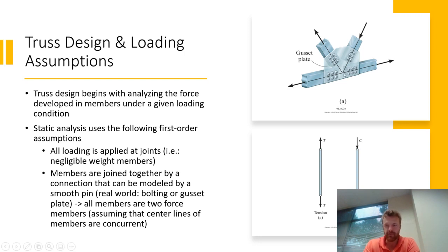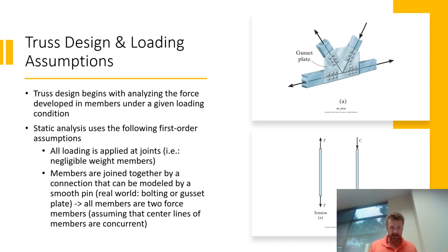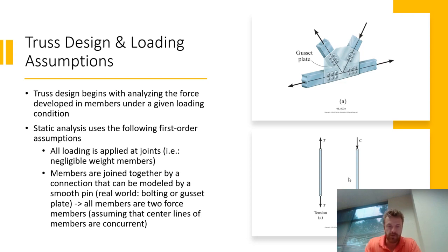At each of our joints — looking at an actual interconnection like a gusset plate in the real world — if all of the members' lines of action, which are just axes drawn along the center of each member, intersect at a given point, that means the forces are concurrent. So we can go to a particle model, back to what we were talking about in Chapter 3. And what that means is that each of these members is just going to be a two-force member, as introduced in the last chapter. So in order for each member to be in equilibrium if the entire truss is in equilibrium, each member is a two-force member.